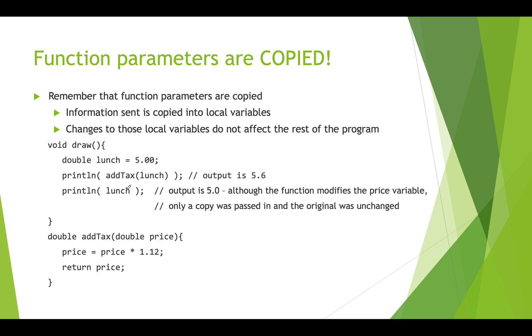But if we then print out lunch to the console, it's still going to print out five because this value of this local variable did not get changed. A copy of it was passed in to add tax, but it was just a copy. And so, this variable is still the same. The output here is five.